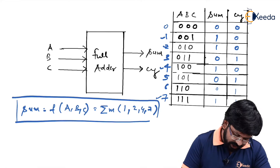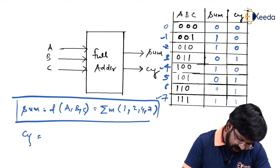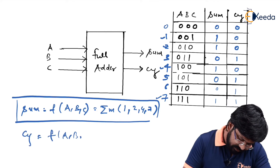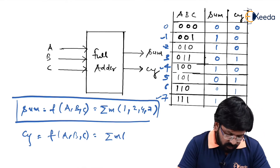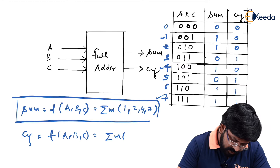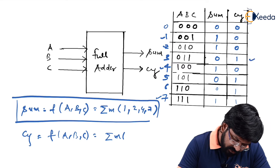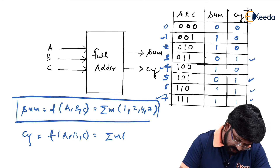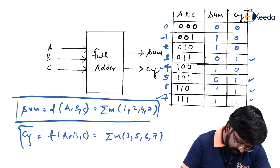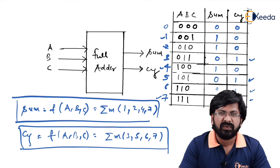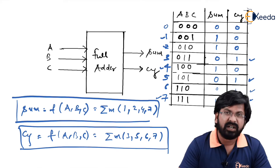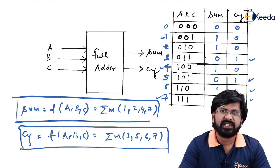For carry also we need to write a similar equation. Carry is also a function of A, B, and C. Only those min terms come out for which carry is equal to 1. Carry is 1 for min terms 3, 5, 6, and 7. So before you implement any circuit with the help of a decoder, the first step is to get the output equation as a function in terms of its min terms. Once you get this, it becomes very easy to implement.